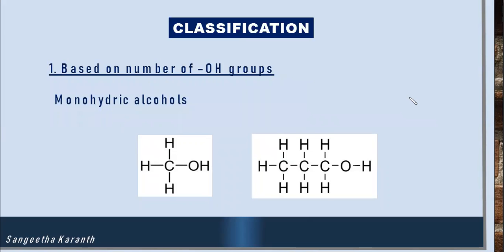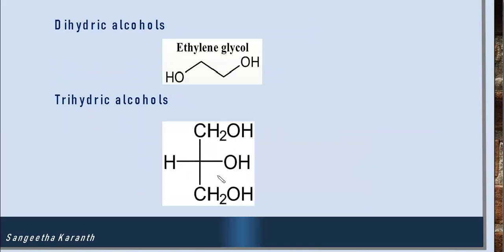The first way of classifying alcohols is based on the number of OH groups. If there is only one OH group in the molecule, we call it a monohydric alcohol — examples include methanol and propanol. Dihydric alcohols, as the name suggests, have two OH groups in the molecule; an example is ethylene glycol.